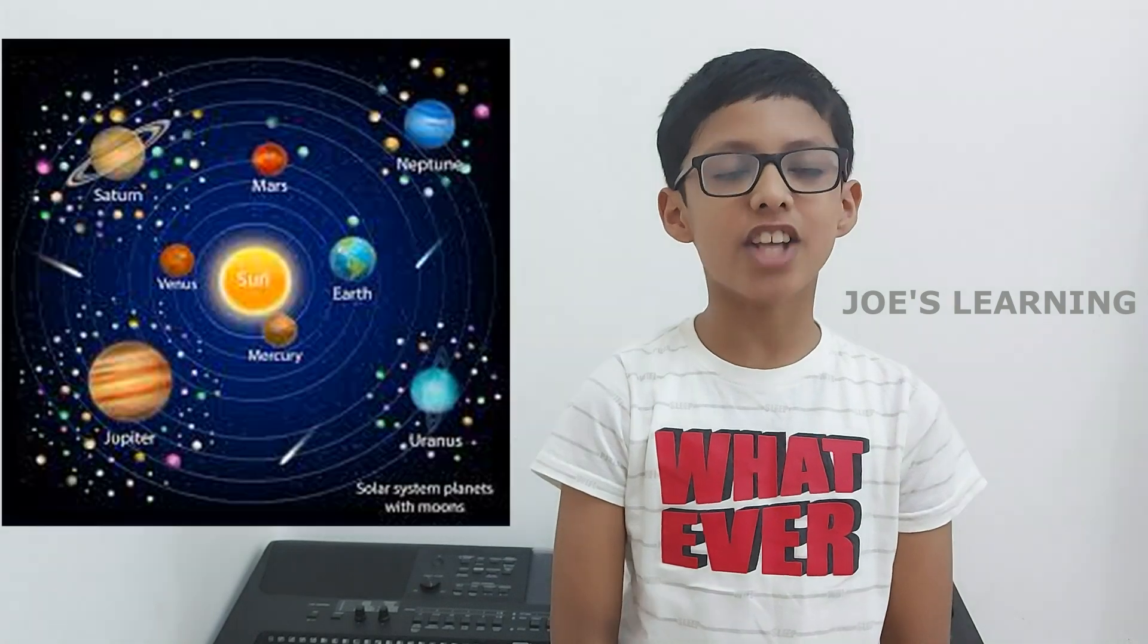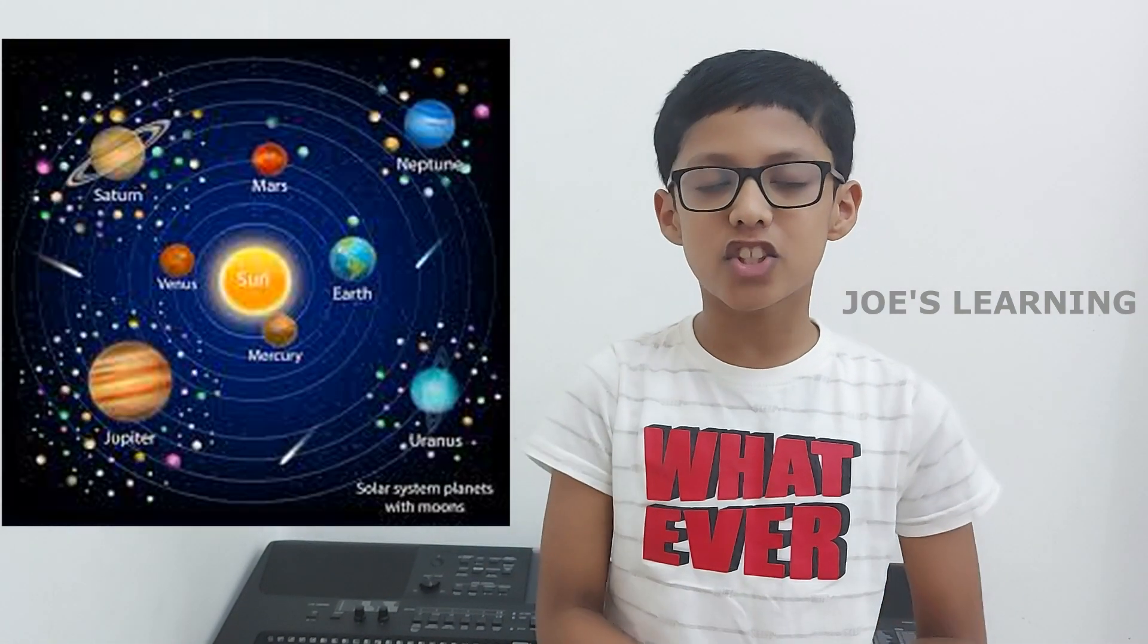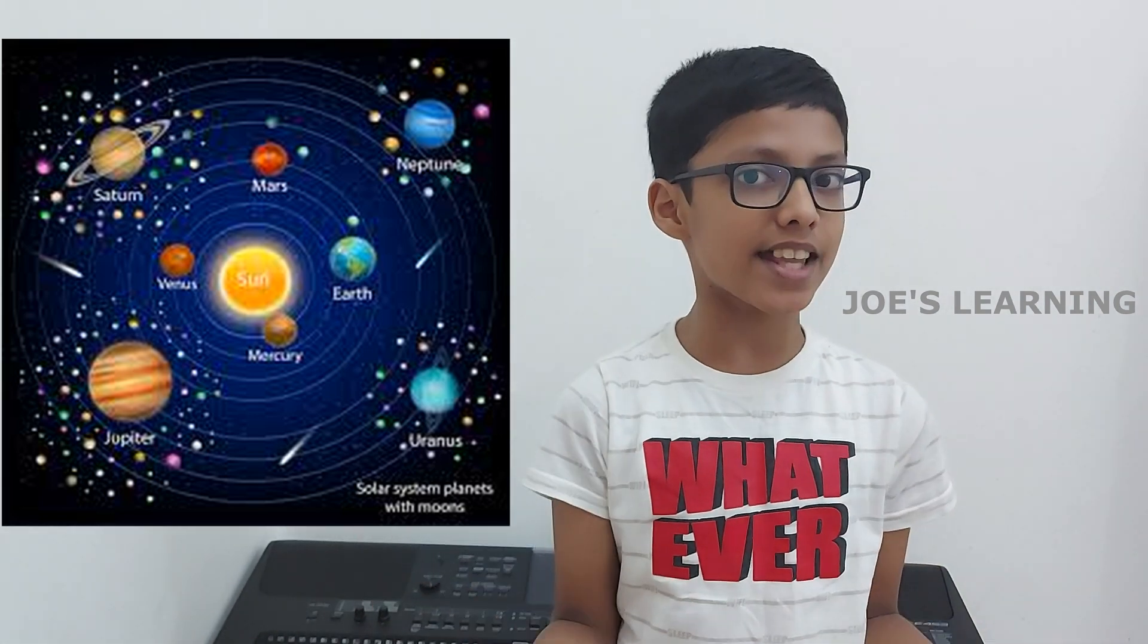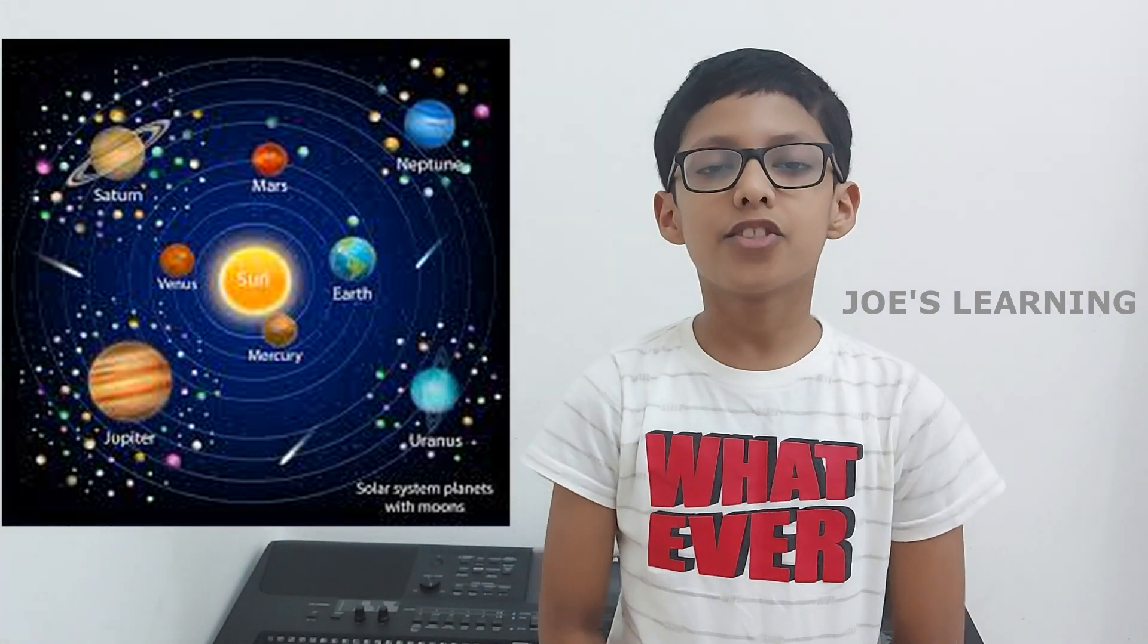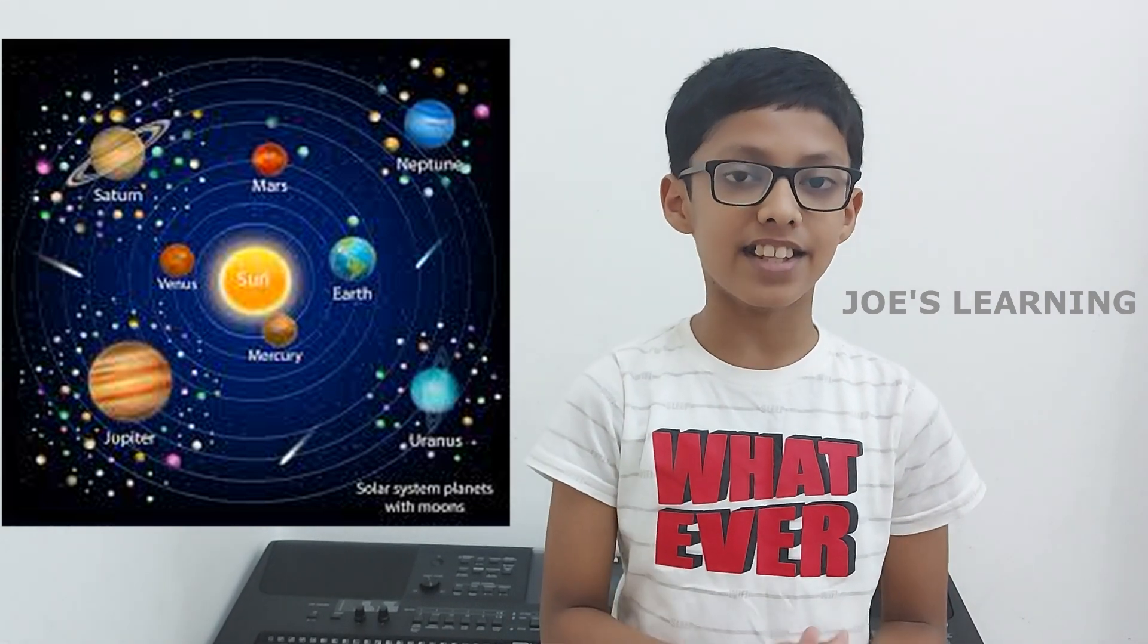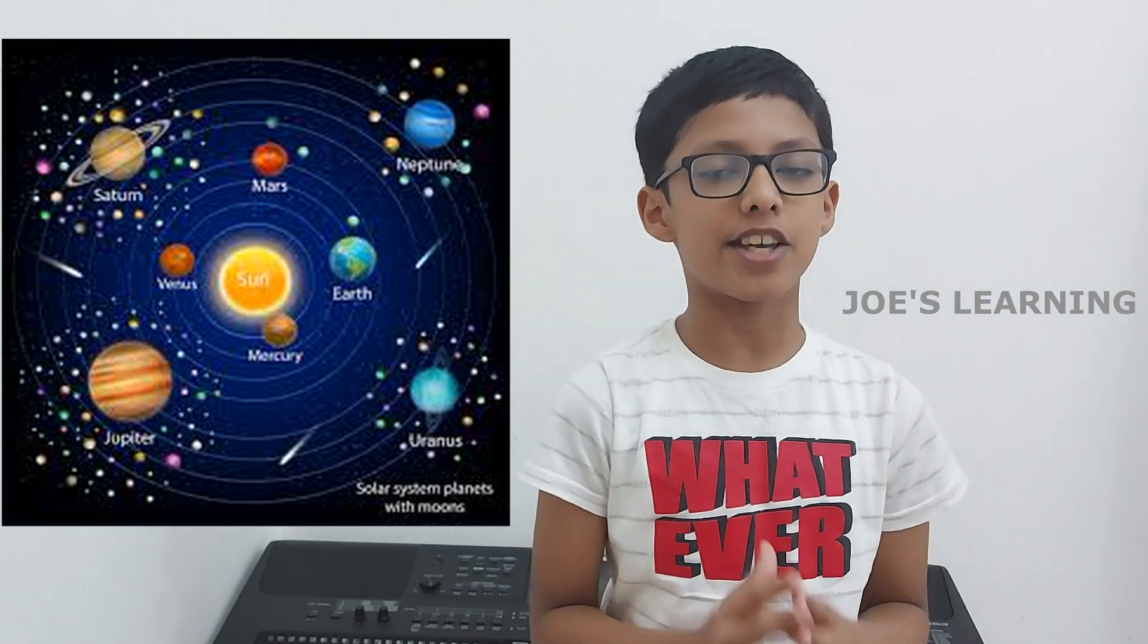Most of the planets have smaller non-shining bodies revolving around them. These non-shining bodies are known as moons or satellites. Our Earth has only one moon. The moon of our Earth gets sunlight from the Sun and reflects it back into space.